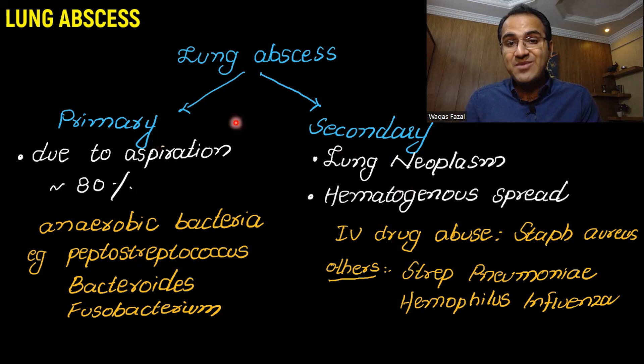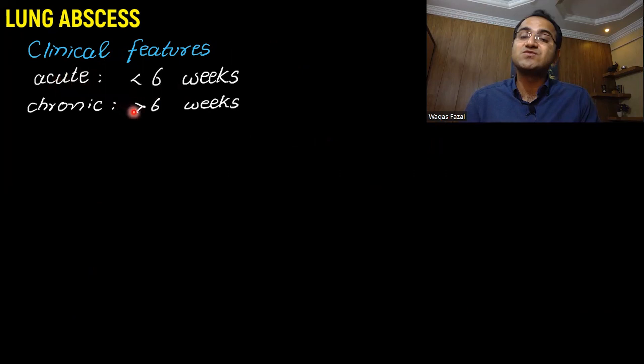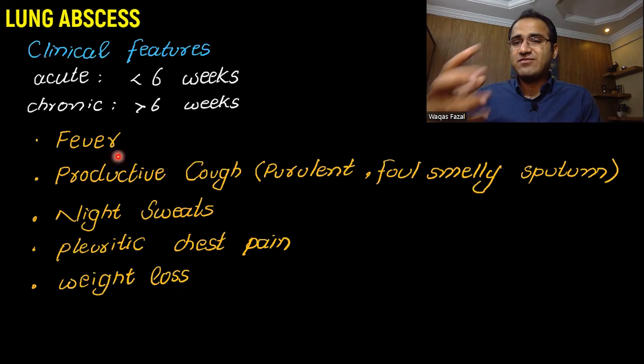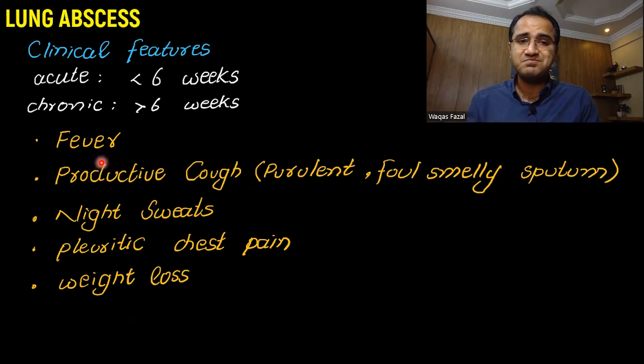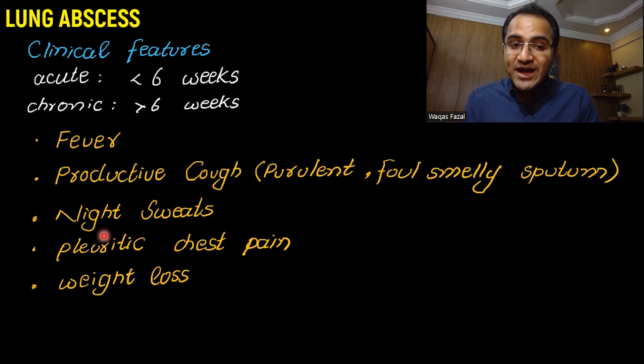Coming to the clinical presentation of lung abscess: if it is less than 6 weeks, it is called acute; if it is more than 6 weeks, it is called chronic. Being an infection, it will present with spiking fever. The patient will have productive cough with purulent, foul-smelling sputum — an indication of anaerobic bacterial infection, mostly due to aspiration — along with night sweats, pleuritic chest pain, weight loss, and anorexia.